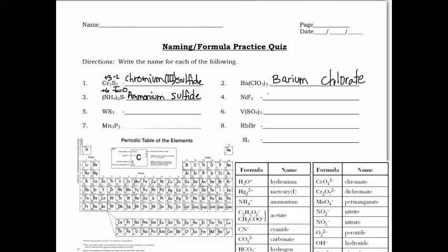Number four: nickel — leave a space just in case — fluoride, not fluorine, fluoride. When we check nickel to see if it has more than one positive oxidation number, it sure does. We figure out what it is based on fluorine, which is a negative one. There are two of them for a total of negative two, so in order for this to equal zero, nickel must be a plus two. There's only one atom of it, so that whole charge goes on nickel. That goes in parentheses — it's nickel(II) fluoride.